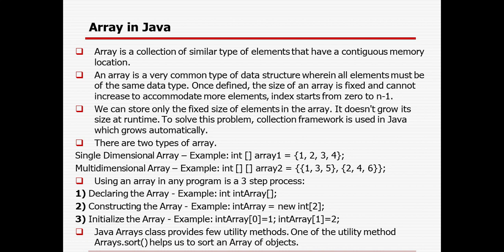There are two types of arrays in Java. One is the single-dimensional array, for example: 1, 2, 3, 4. And the other is the multi-dimensional array. I have given a two-dimensional example, where there will be two dimensions.